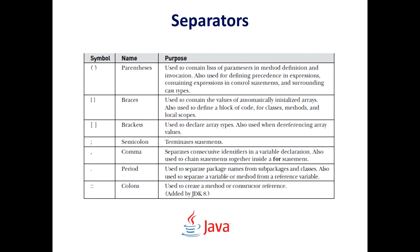The comma separates consecutive identifiers — for example in a variable declaration — and is also used to chain statements together inside a for statement. The period, also known as full stop, is used to separate package names from sub-packages and classes, and also to separate a variable or method from a reference variable.